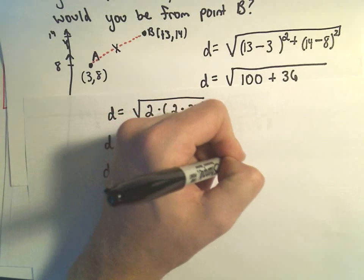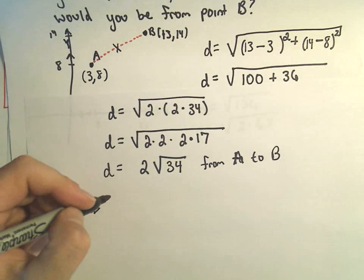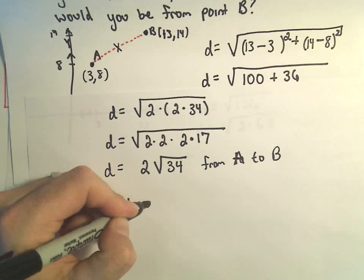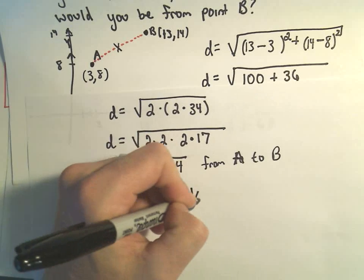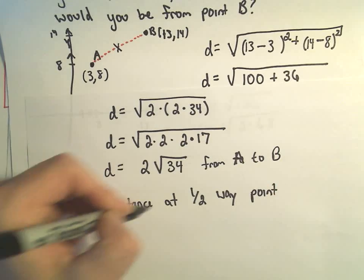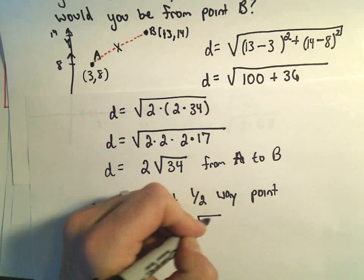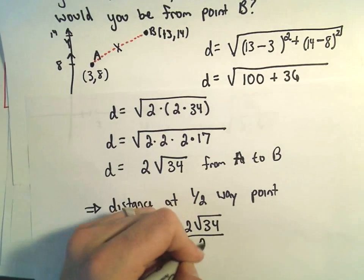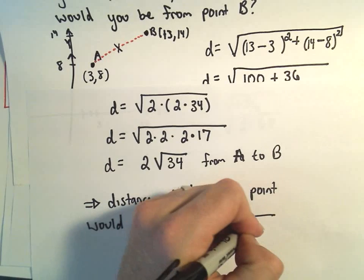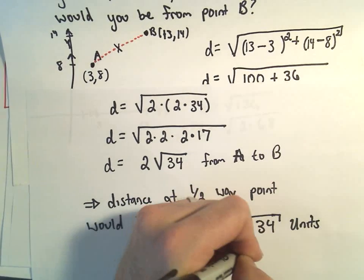Which implies the distance at the halfway point would be, well we would just take half this distance. So we would take 2 square root of 34, divide that by 2. The 2's would cancel, so it says basically we're square root of 34 units away.